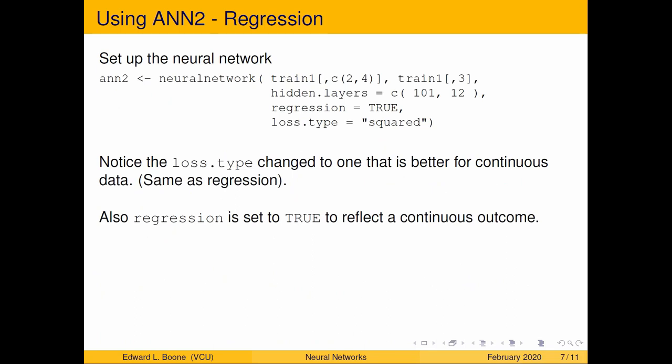All right so now we're up to where we can actually use the artificial neural network. So here we're going to ANN2 neural network train one. The columns we're interested in are two and four. Only two and four. It's not through four. It's two and four. And what we're interested in as our outcome is in the third column. For our hidden layers we're going to do 101 hidden nodes on the first layer and then 12 on the second layer. So there's going to have two layers, one with 101, the other one with 12.